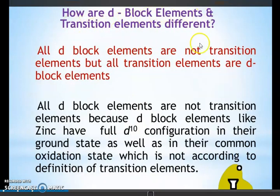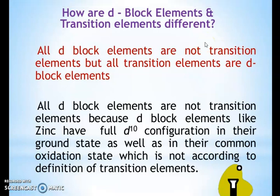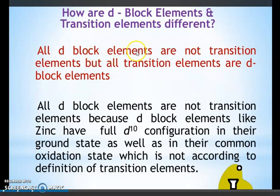How are D block elements and transition elements different? Not all D block elements are transition elements. D block elements are those where the last electron enters the D sub-shell. Transition elements are those where the d-orbital is incomplete in any ionic state. All D block elements are not transition elements, but all transition elements are D block elements. For example, Zinc has a fully filled 3D¹⁰ configuration in its ground state as well as in its common oxidation state, which does not meet the definition of a transition element.